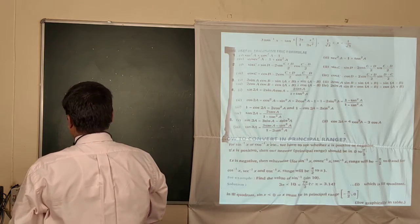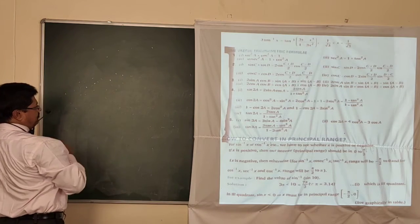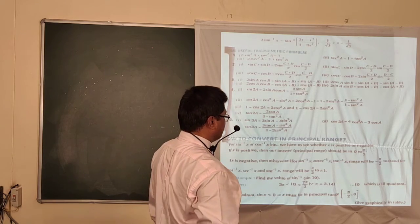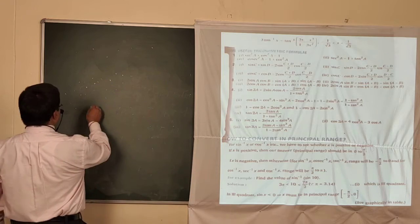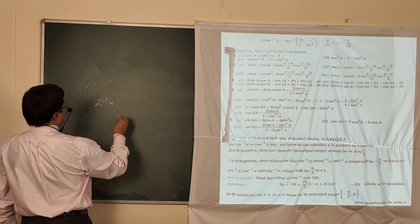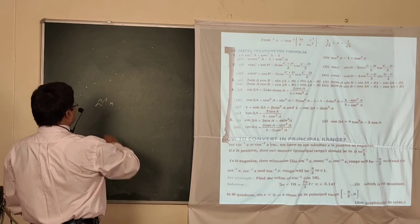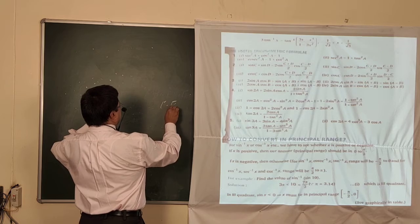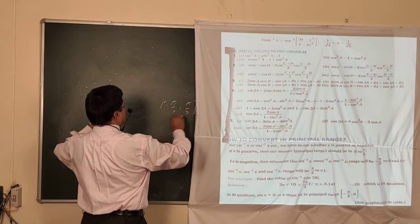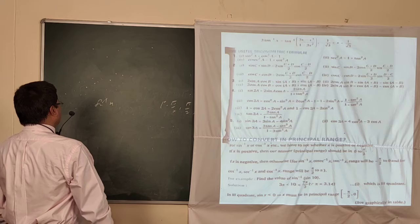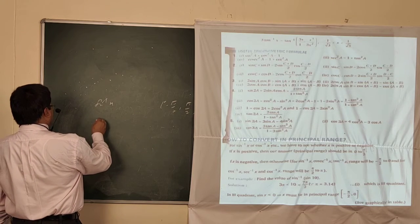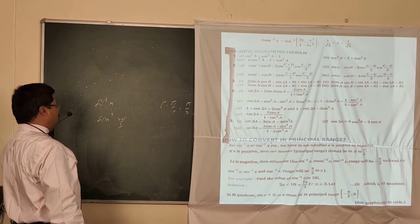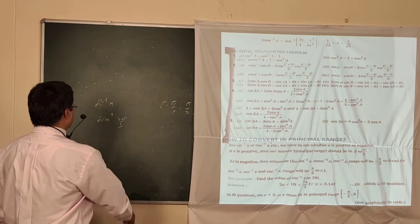How to convert to the principal range. Suppose a question is given — how to convert it to the principal range. The principal range of sin inverse is restricted to [-π/2, π/2]. Suppose you want to find sin⁻¹(2π/3). How do you convert this to the principal range?